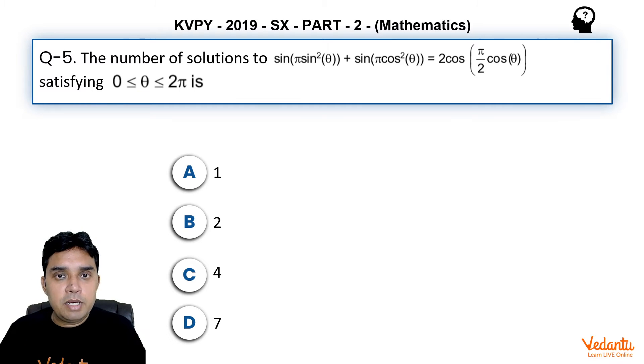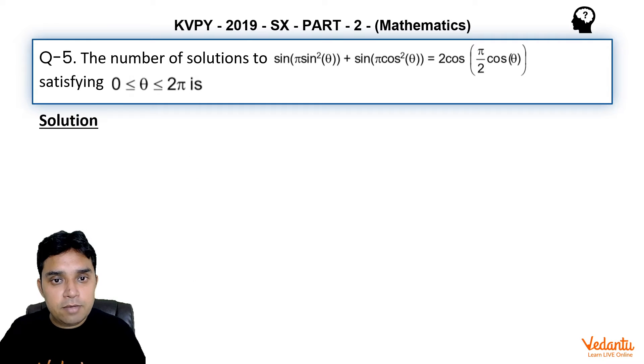Hello everyone, I am Surendh Jain, master teacher at Vedantu. We are discussing the paper of KVPI 2019 SX Stream. This is question 5 of part 2 from the topic trigonometric equation. The question says: the number of solutions to sin(π sin²θ) + sin(π cos²θ) equals 2cos(π/2 cosθ) satisfying 0 ≤ θ ≤ 2π is (a) 1, (b) 2, (c) 4, or (d) 7.